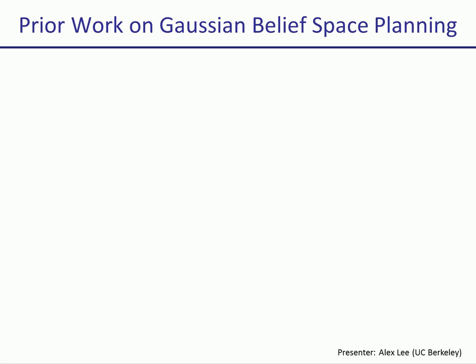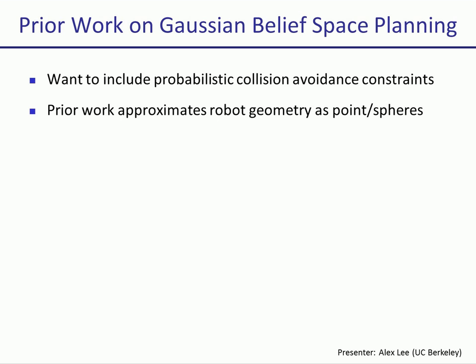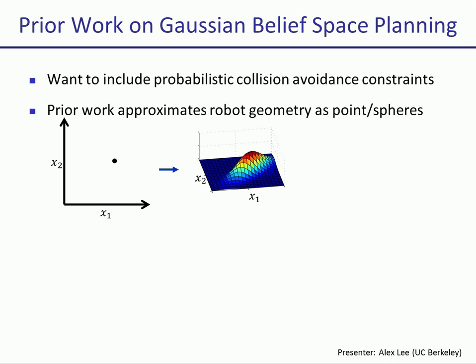As we have set up the problem so far, we haven't yet accounted for obstacles. In order to deal with obstacles, we need to consider collisions between the robot and obstacles. However, the state is uncertain. Previous work formulated collision avoidance constraints but only works for point and spherical robots, and here is why. Consider a two-dimensional point robot whose belief state is described by a Gaussian distribution. Consider a contour of this distribution, which is an ellipse around the mean. For the case of a point robot, the probabilistic collision avoidance constraint can be formulated as a collision avoidance constraint with respect to the ellipse.